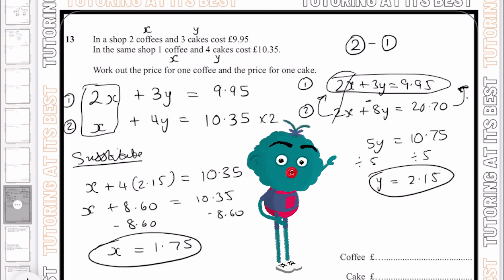And there we are. So y, which is my £2.15, that is the cost of my cake, and x, which is £1.75, is the cost of my coffee.